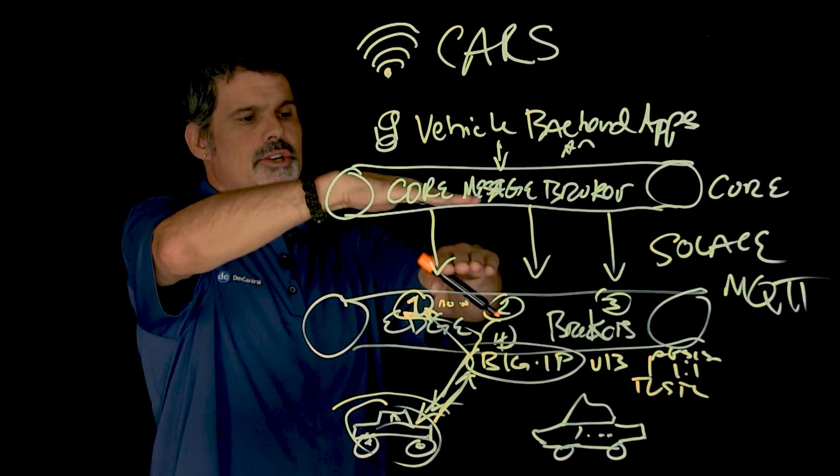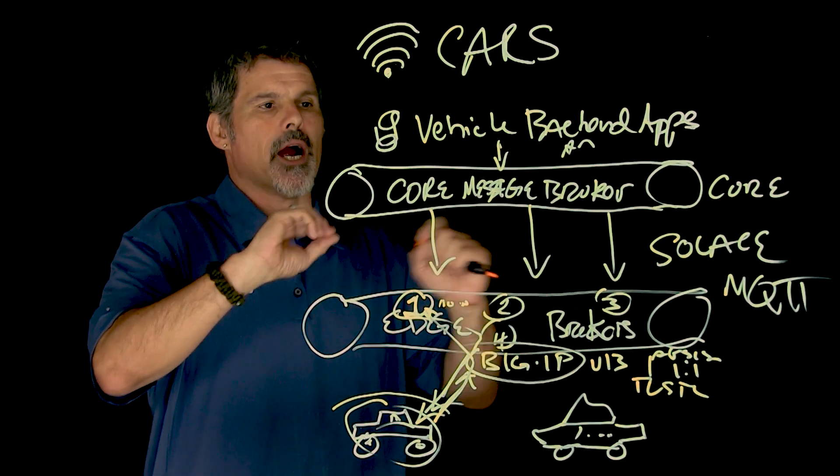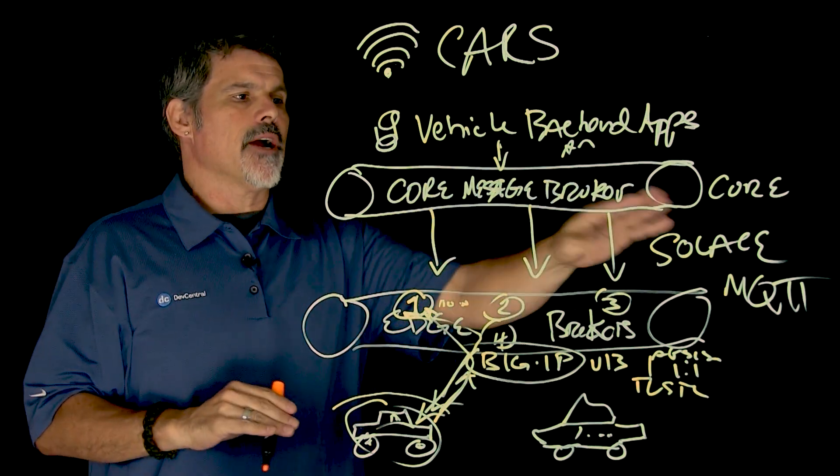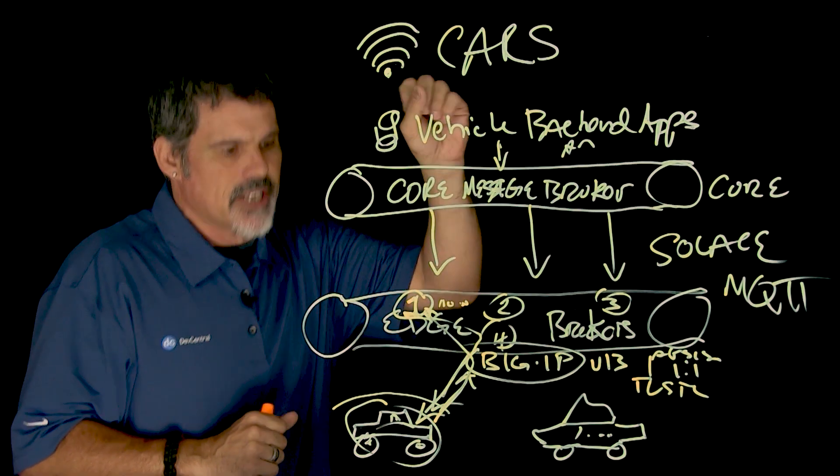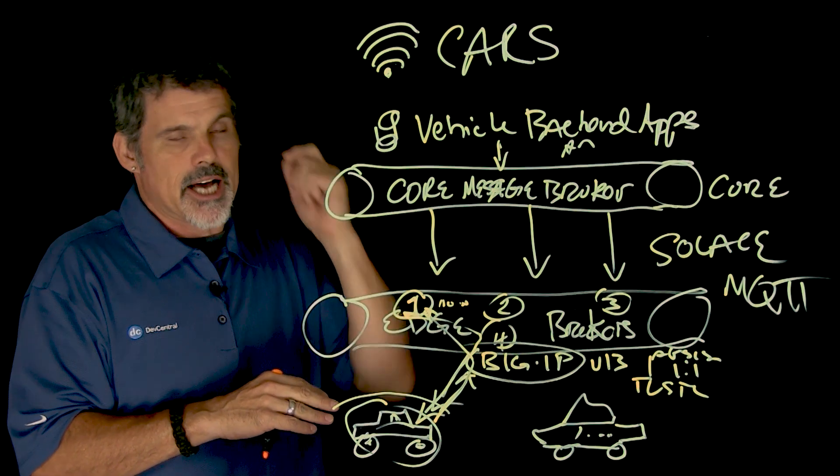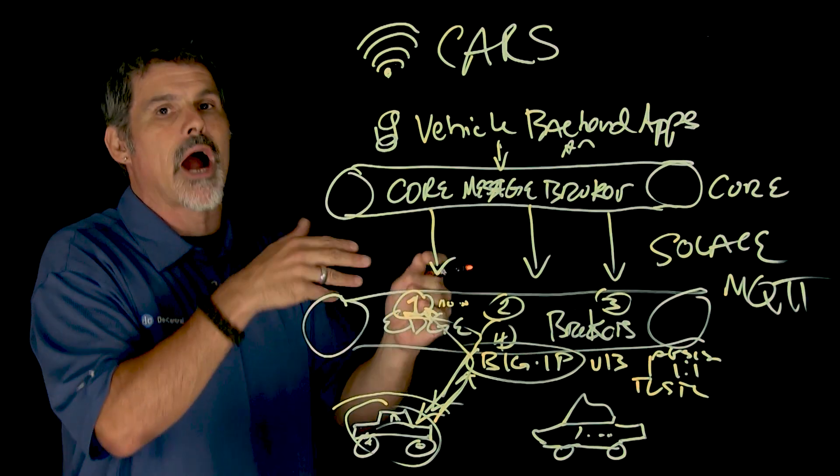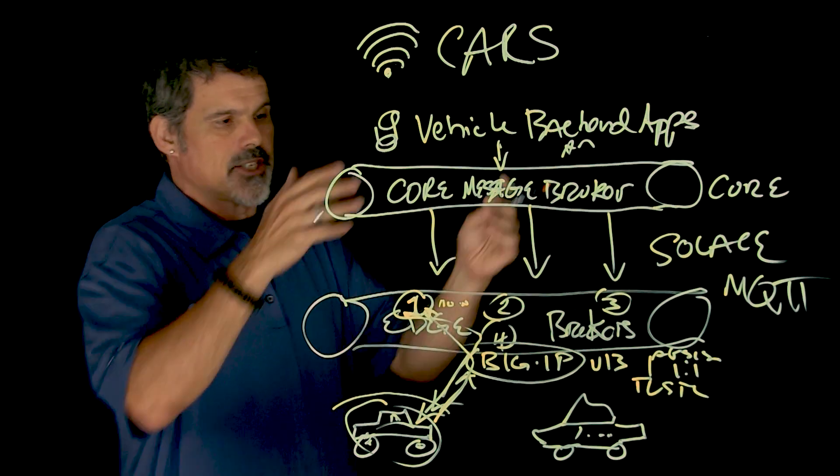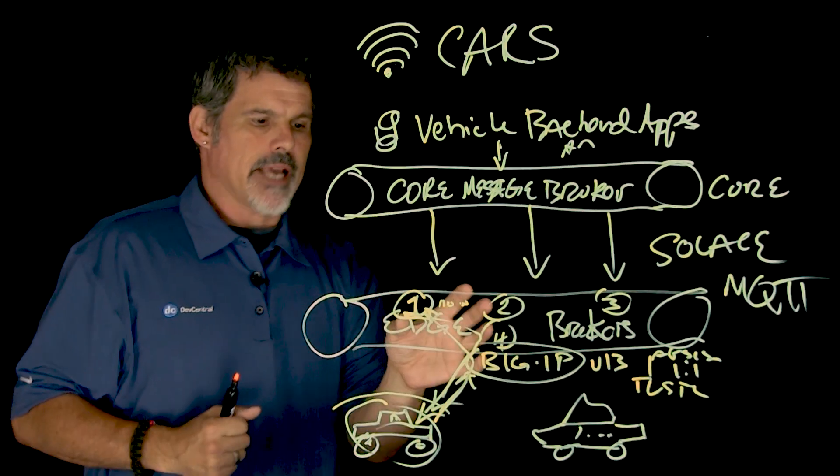we'll do the TLS termination right here from the vehicles going MQTT back and forth. It's also, this architecture is kind of decoupled, where this guy up here, the core message broker, doesn't, it just kind of sends the message out. And because MQTT is the subscribe and publish,